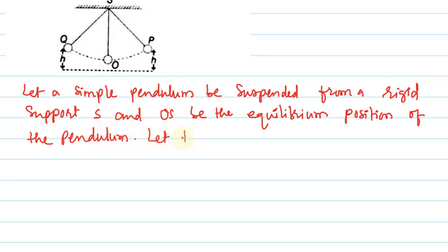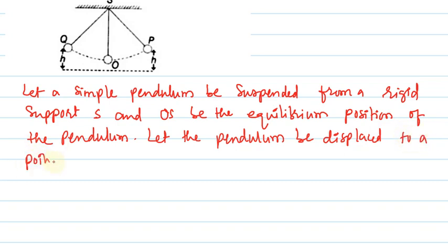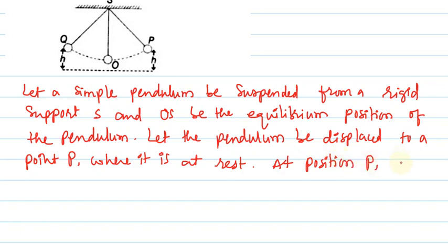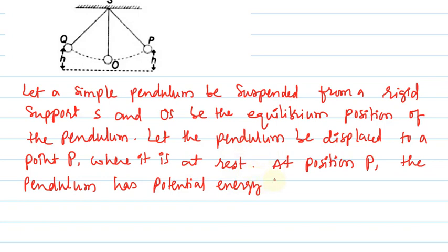Let the pendulum be displaced to a point P. Point P is the extreme position where it is at rest. At position P, the pendulum has potential energy equal to mgh, where m is mass, g is acceleration due to gravity, and h is height.